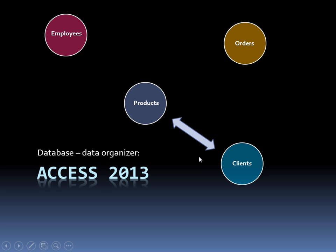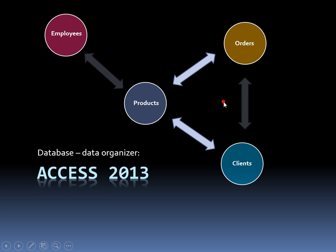But if I go ahead and create a relationship — Access being a relational database — then for every product that's purchased, it's going to be tied to a client. Not only that, but every product purchased goes through an order, with an order ID and a date of purchase. So the clients relate to the orders, which keep track of the date they made the purchase. If I just want to find out how many orders a client has made, I'll pull up just these two tables — clients and orders — and it will be accurate because they're relating to each other.